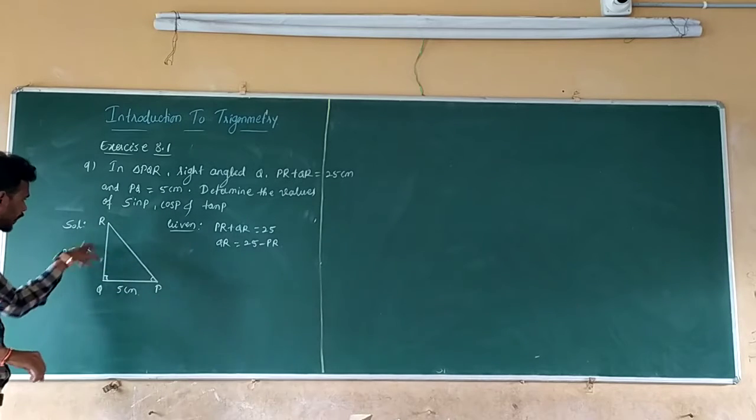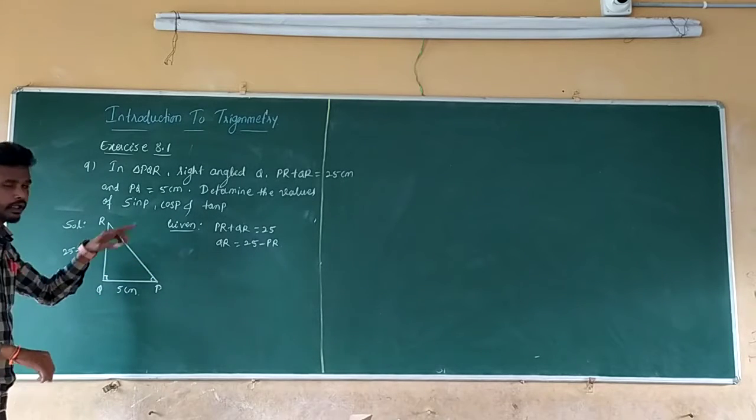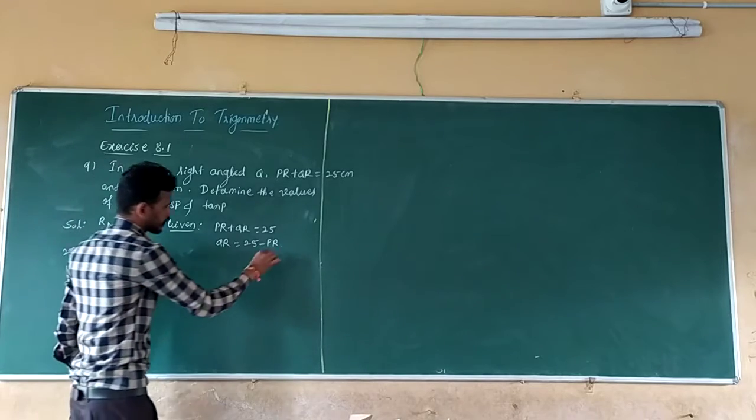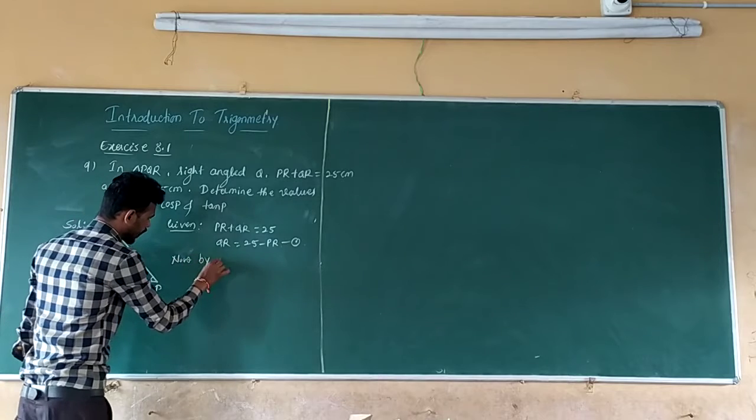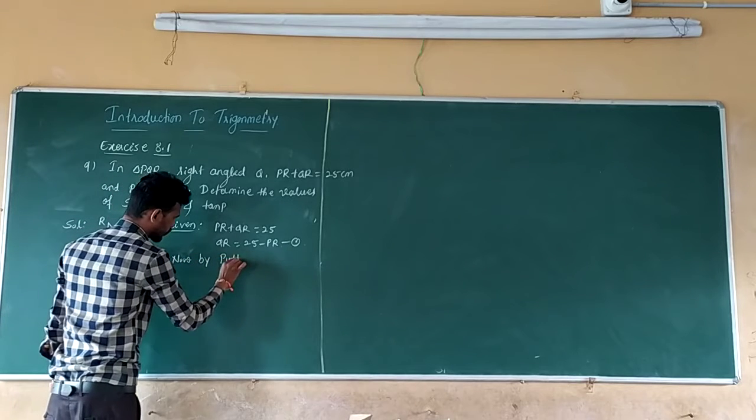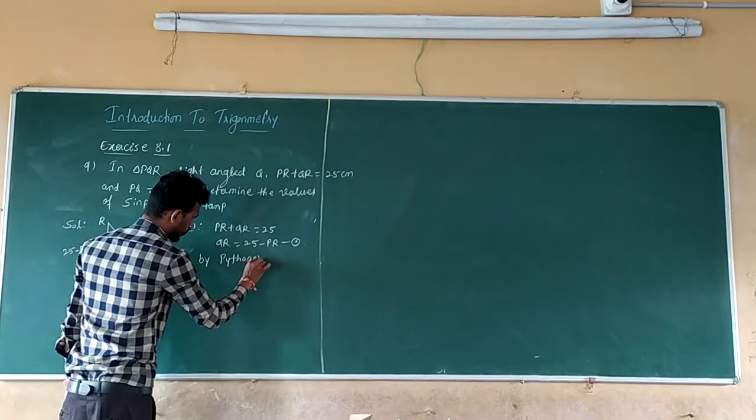Then by using the Pythagorean theorem, you know, find the two sides. So let us take this as equation 1. By Pythagorean theorem, PQ squared equals...